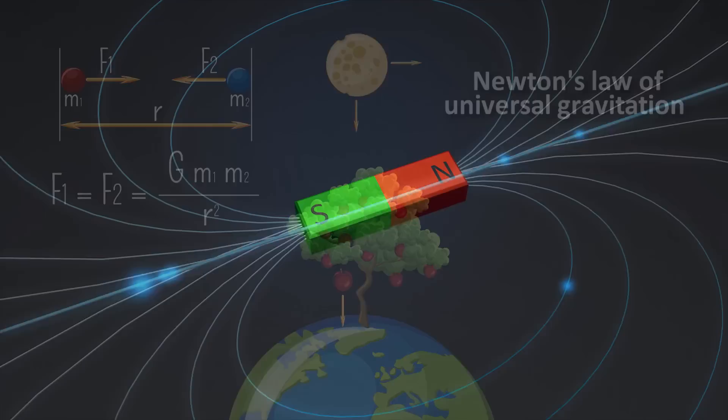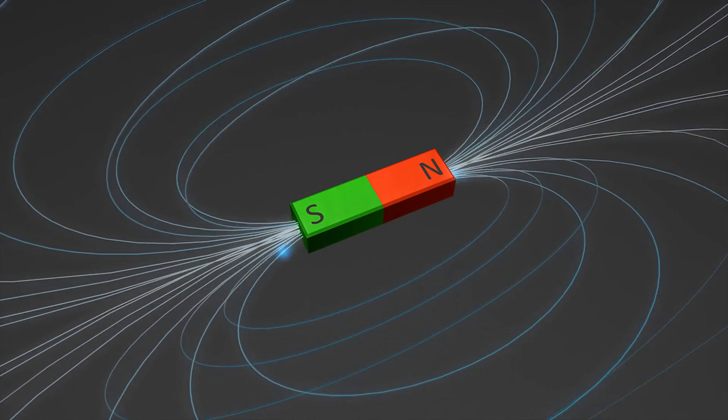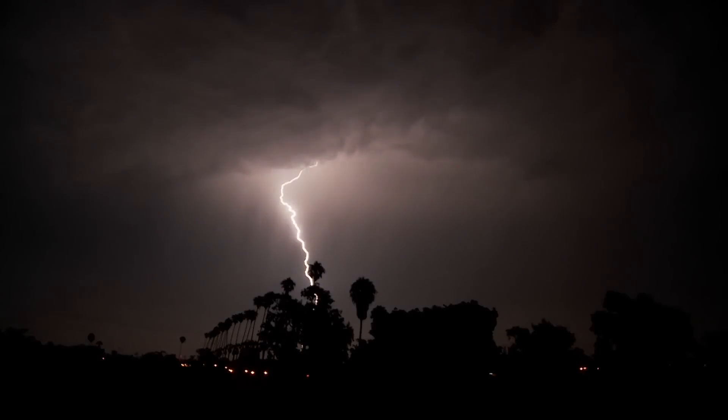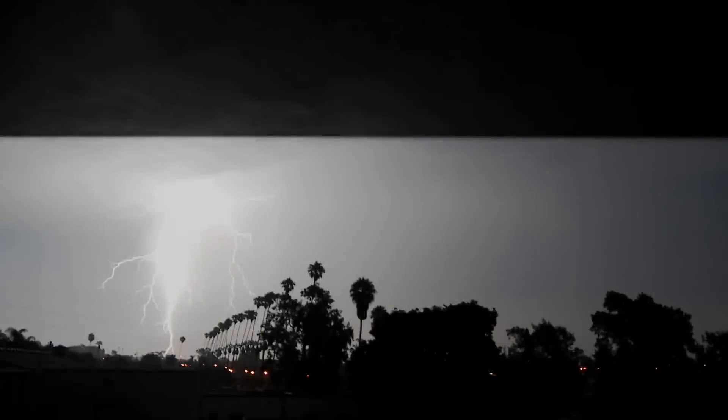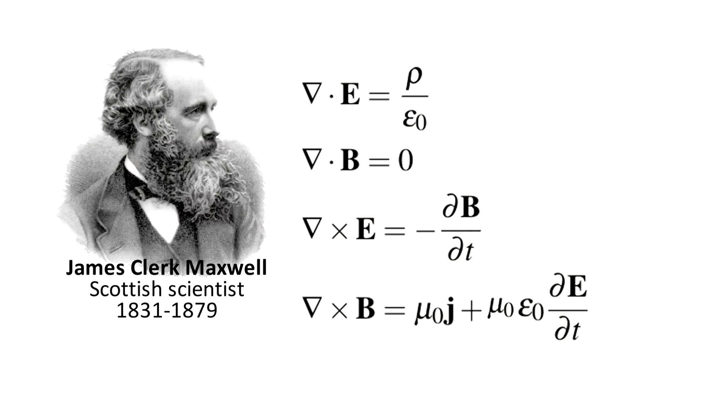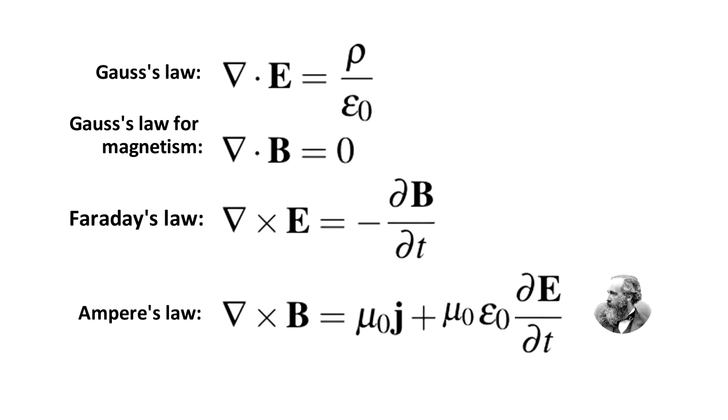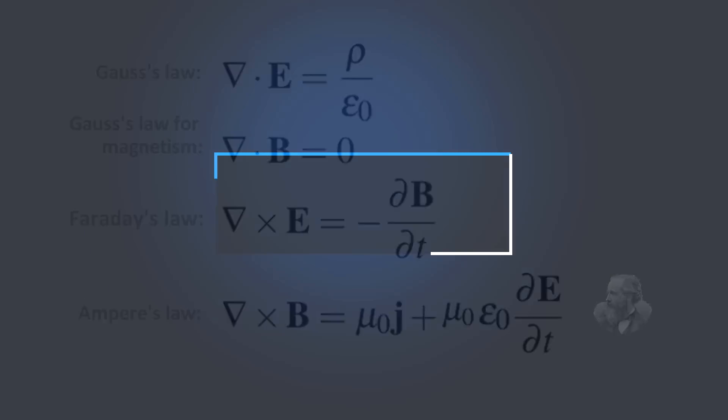Similarly, prior to 1865, magnets were known to exist and electricity had also been discovered. But it was not obvious that they were connected. James Clark Maxwell found the connection and worked out the equations describing the relation between electricity and magnetism, or as we came to call it, electromagnetism. These are now called Maxwell's equations. He also found that light was caused by the same phenomenon.